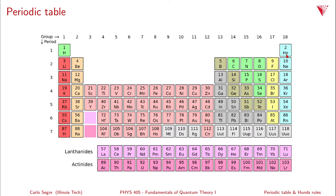That would be a singlet state. We'll discuss helium as having one electron spin-up and one electron spin-down in the 1s orbital. The 1s orbital means n=1, l=0, and m=0. For each electron, one has spin m_s = +1/2 and the other has m_s = -1/2.